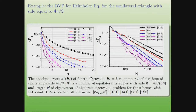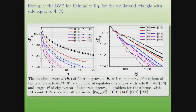One can see that if we use only the same grid, the result obtained by Lagrange polynomials is better than Hermite. But if we view the result with respect to the dimension of the eigenvector, we see that Hermite polynomials work better.